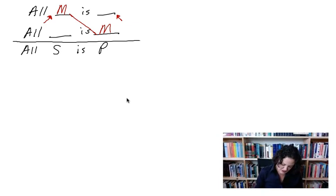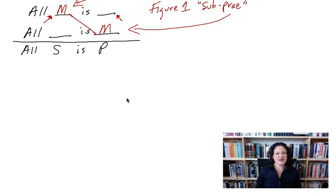Let me clean this up a little bit to show you. Okay, so this is called figure one and we'll call it sub-prey. Why? Because the M is in the subject term here and it's in the predicate term here. What about the other blanks? The other blanks are the P term and the S term. Remember this S is the minor term.